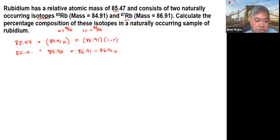So what we're going to do, we're going to put all the same expression at the same side. So here, we can put 85.47 minus the 86.91, and then here, 84.91x minus 86.91x. As you could see, the value that you will get there is a negative.